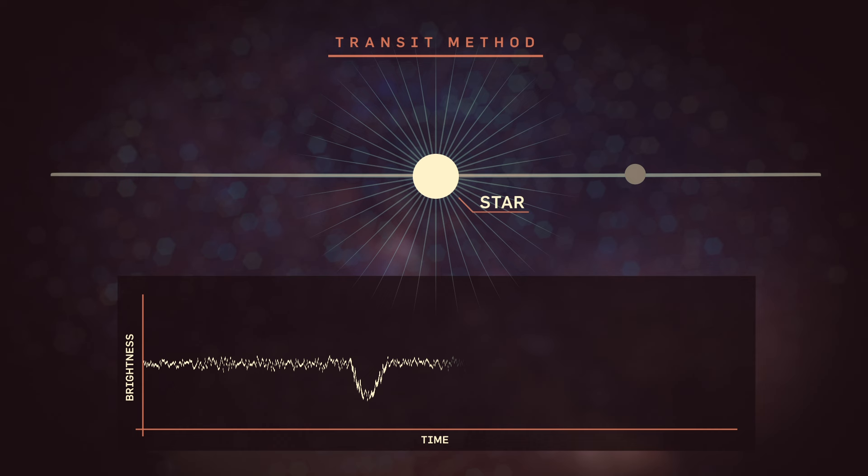Then when a planet crosses in front, that blocks some fraction of the surface of the star. So what you'll see is a dip in the intensity from the star.